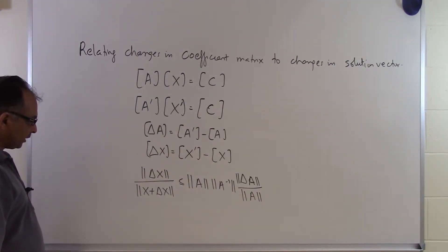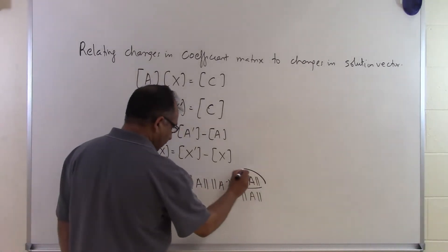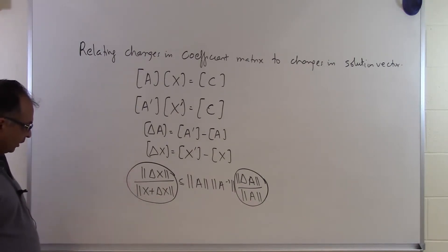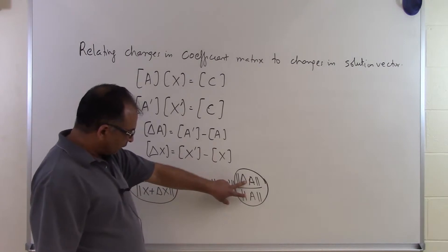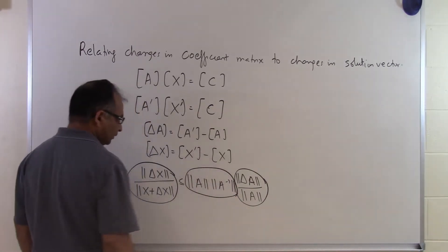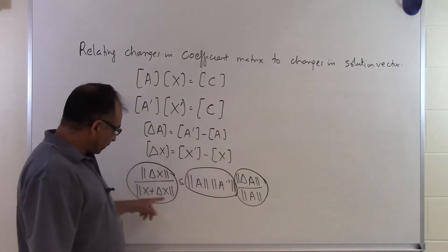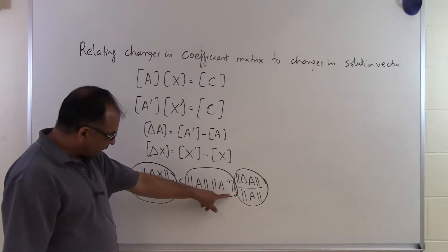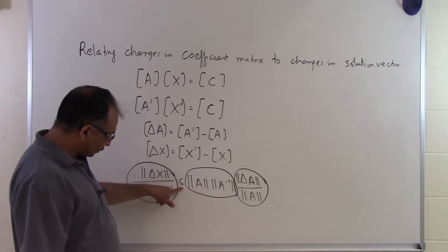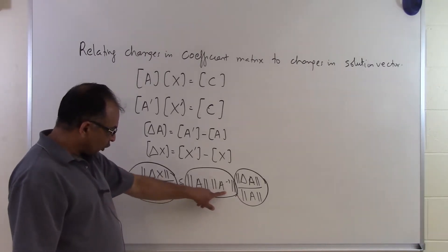What we are basically saying is that the relative change in the solution vector is related to the relative change in the coefficient matrix by this quantity. If you make a relative change in your coefficient matrix, the relative change in the solution vector can get amplified by as much as this number — which is the norm of A times the norm of A inverse. It doesn't mean it gets amplified by exactly that number, but it can be amplified by as much as that, because of the less than or equal to sign.